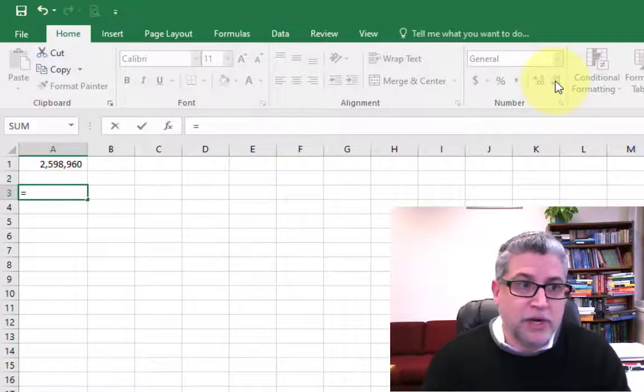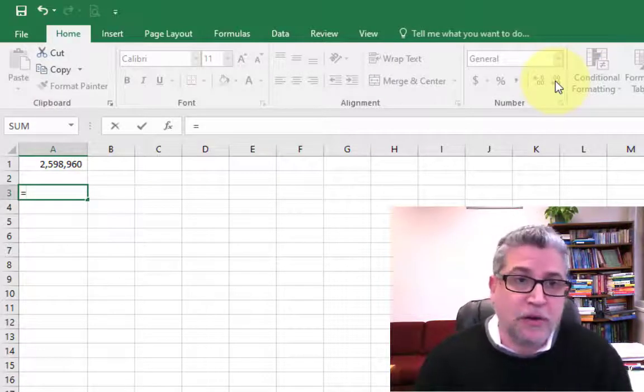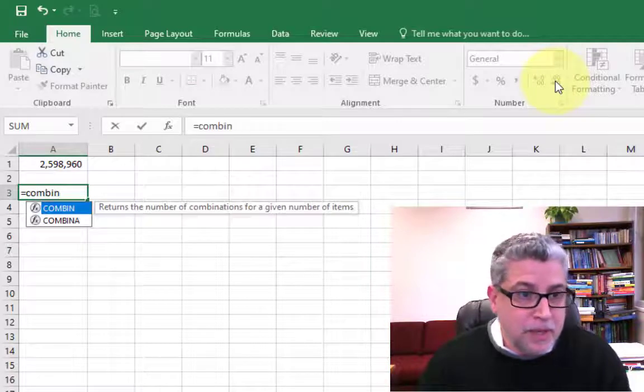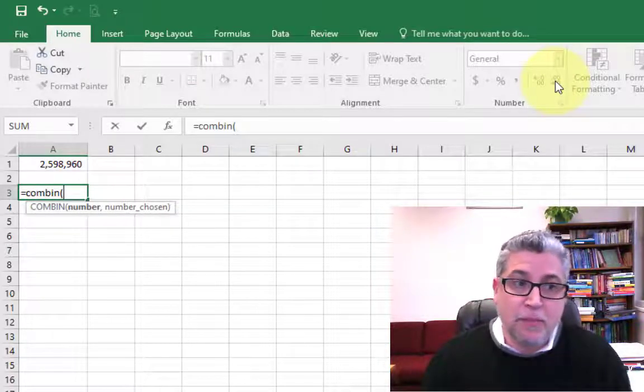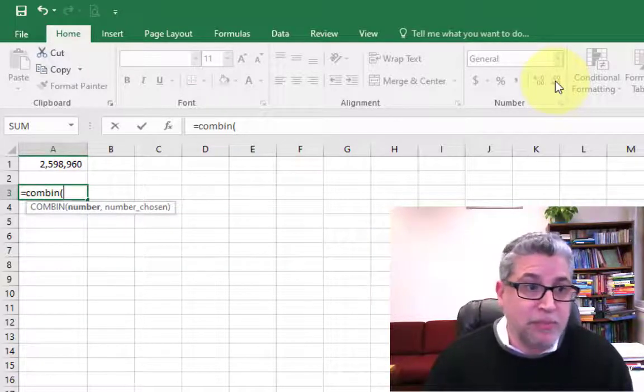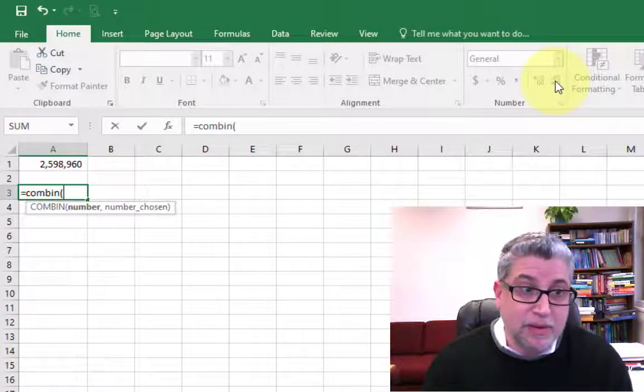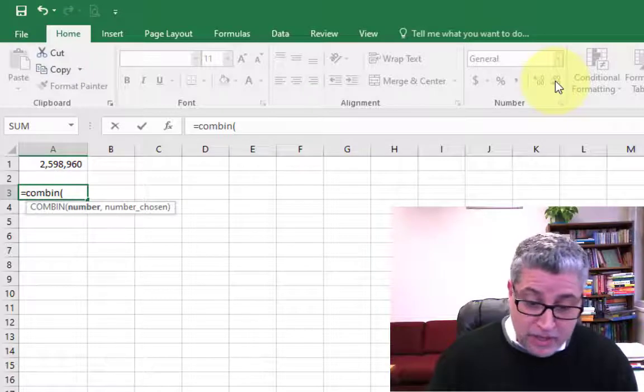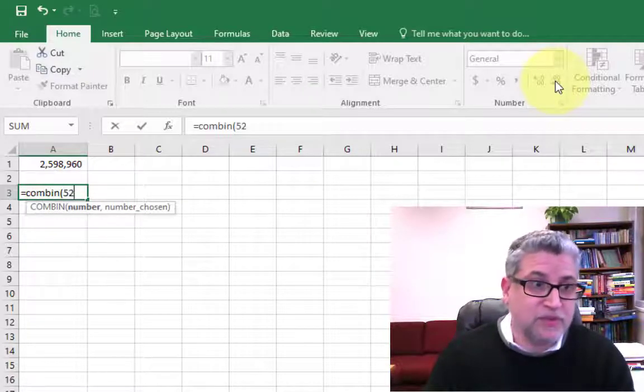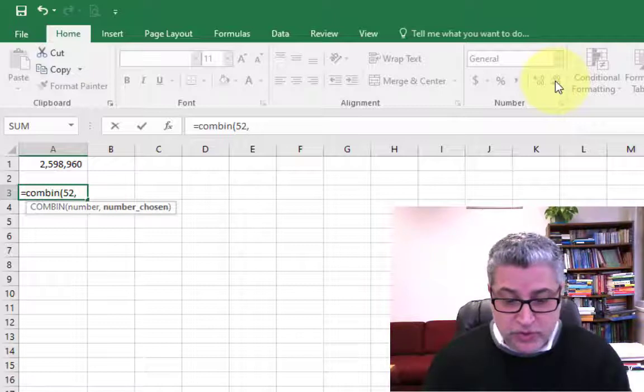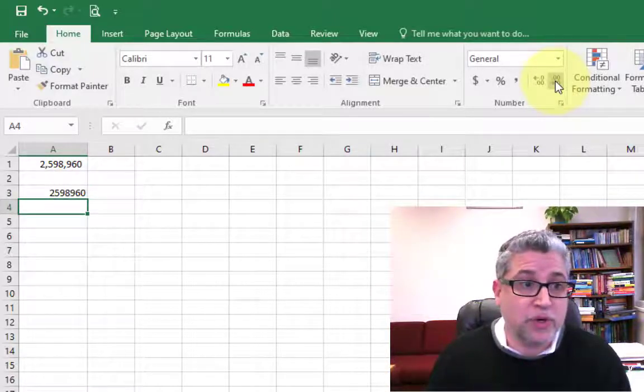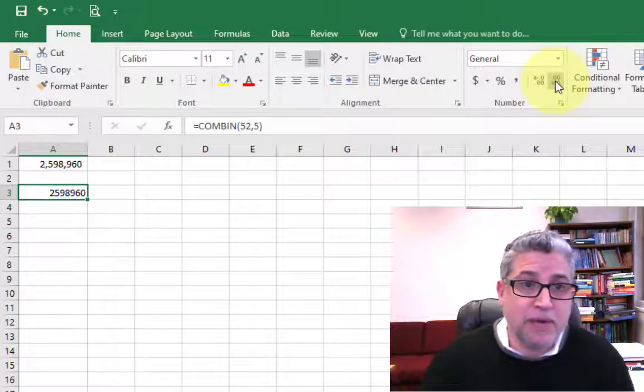So we could get the same exact thing, starting off with all formulas start off with an equal sign and then we have COMBIN and then we open up our parentheses. We get a prompt and it says, how many and then how many. How many cards do we have? It's 52. And then we're choosing how many? We're going to be choosing 5. And then Excel is going to do the factorials for us and we get the same number.